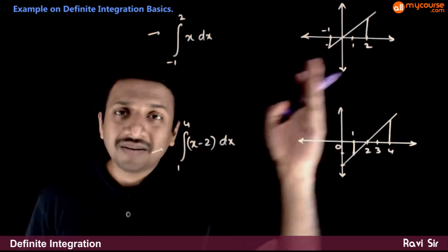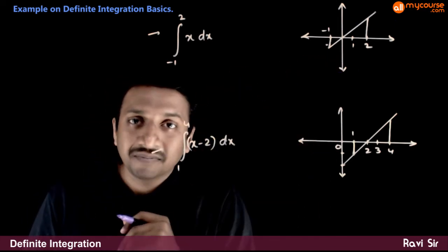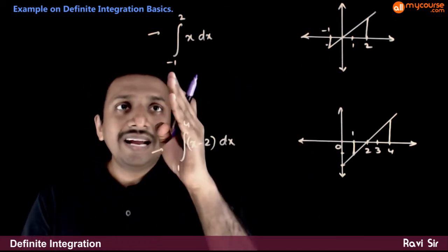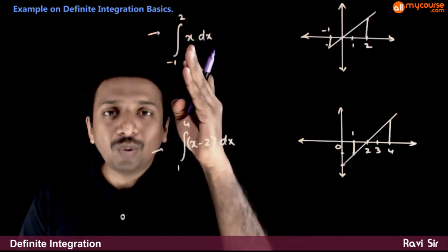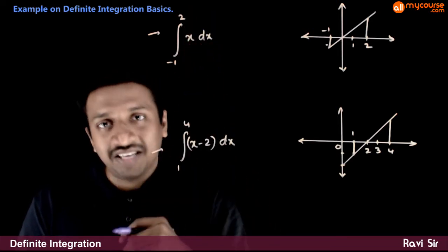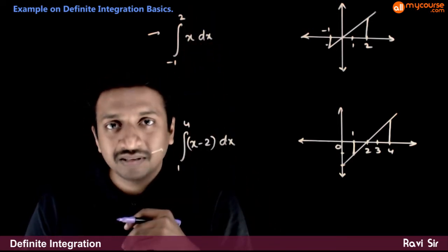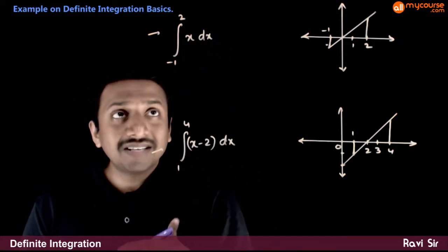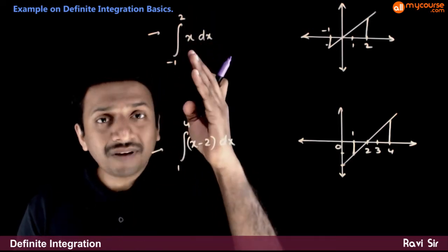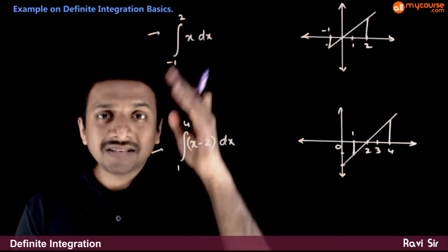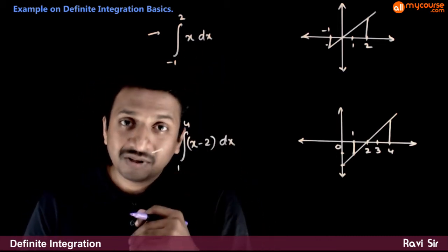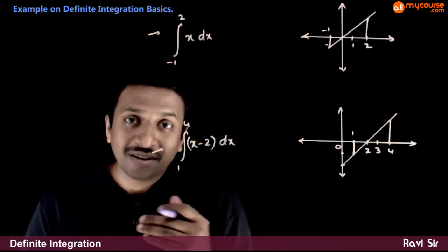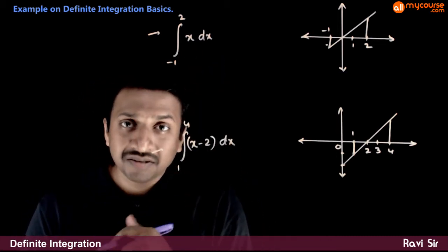Now let us look at these two very simple examples. Integration from minus 1 to 2 of x dx. Let us first find the answer directly using the mathematical process.